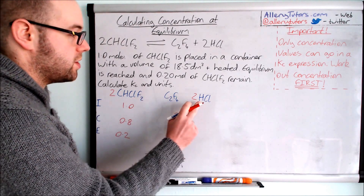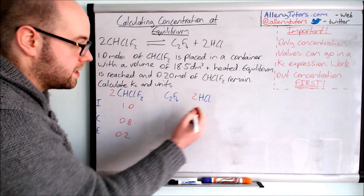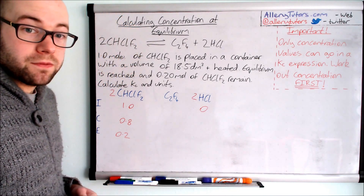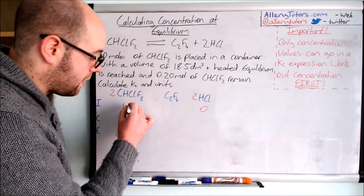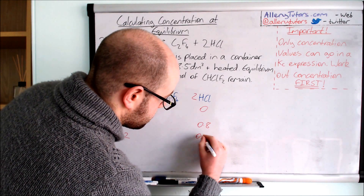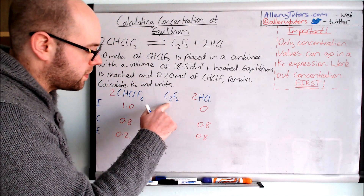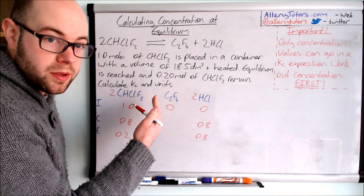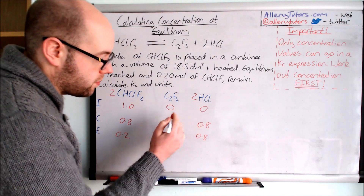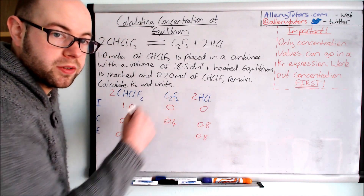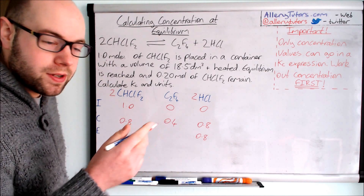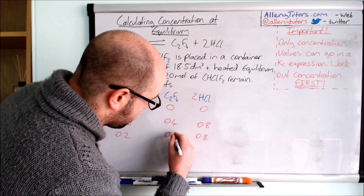Because we have a 2-to-2 ratio between CHClF₂ and HCl, the drop of 0.8 in CHClF₂ means HCl increases by the same amount. We started with no moles of HCl since it's a product, so at equilibrium we have 0.8 moles. For C₂F₄, it's a 2-to-1 ratio, so it only increases by half as much — 0.4 moles — giving us 0.4 moles at equilibrium.